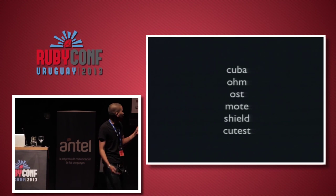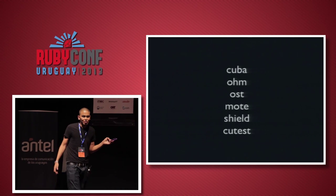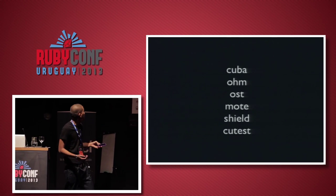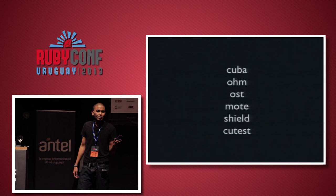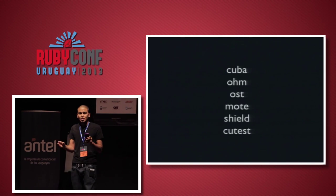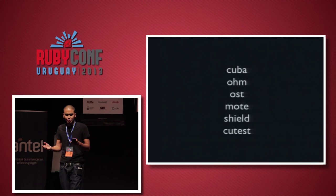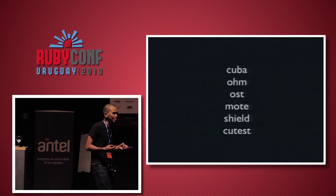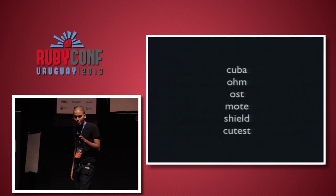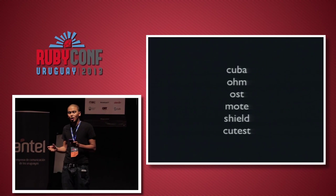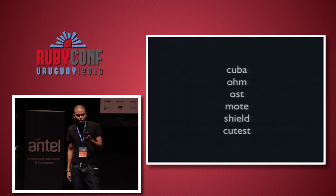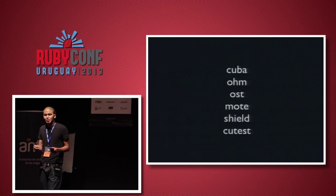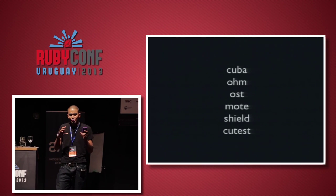Here's our toolkit. We use Cuba for the web framework, similar to Sinatra. We have OM for object-relational mapping using Redis as the backend. OSD for queueing instead of Rescue. Mode for the view layer instead of ERB or Haml. Shield for the authentication library instead of Devise. And Queue Test, something that forks tests and makes them a bit faster.